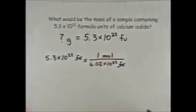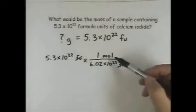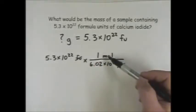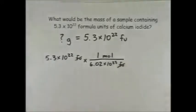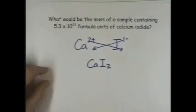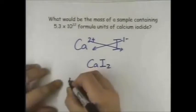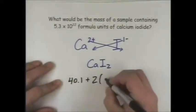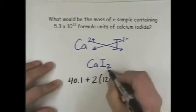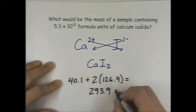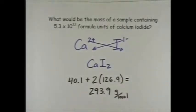The formula units cancel. But we're not done yet since we're looking for grams. We need the relationship between grams and moles, so we need to find the molar mass of calcium iodide. Going back to the formula and looking on the periodic table, calcium has a mass of 40.1 and iodine has a mass of 126.9. So 40.1 plus 2 times 126.9, because of the formula, gives us 293.9 grams per mole as the molar mass of calcium iodide.